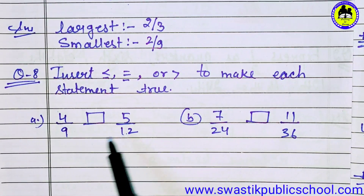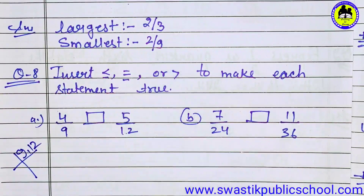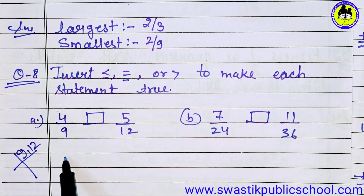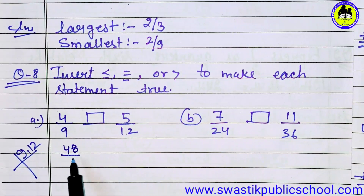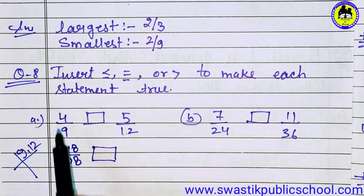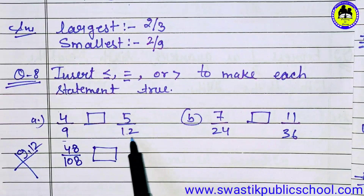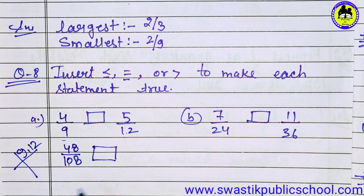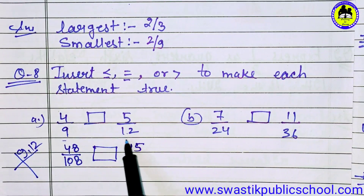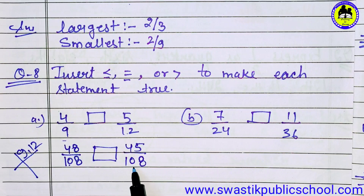We will first convert both terms to like fractions, same as we did in the last question. When we find the LCM of 9 and 12, it will be 108. To convert the first fraction to denominator 108, we multiply by 12: 4 × 12 = 48, and 9 × 12 = 108. For 5 upon 12, we multiply by 9: 5 × 9 = 45, and 12 × 9 = 108.